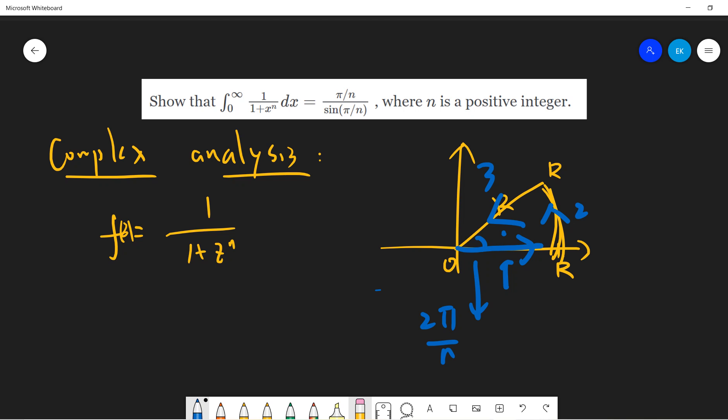And there is only one pole here. So it's easy to check that the pole is, if z0 is exponential pi i divided by n, because z0 to n will be exponential pi i, which is negative 1. So z0 will be maybe here. This is the only pole.